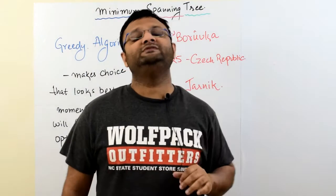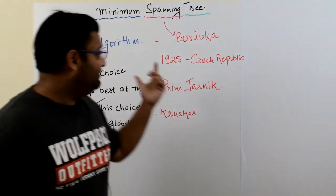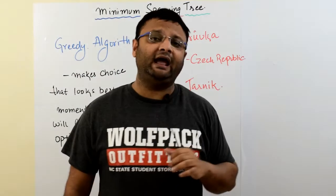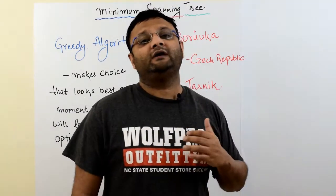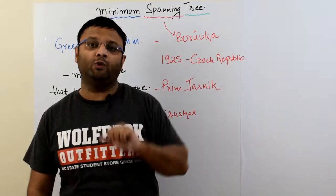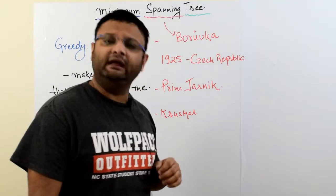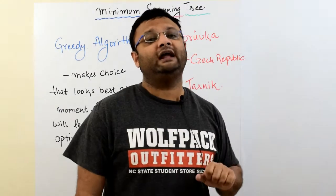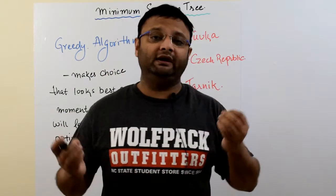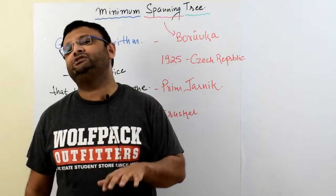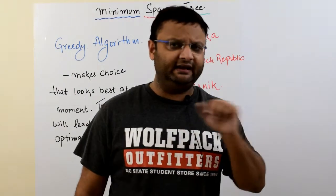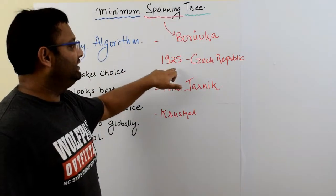Now a brief history — the minimum spanning tree algorithm originated from a problem discussed in episode one. A gentleman named Borůvka, a mathematician, was tasked with efficiently laying electrical wiring between cities in Czech Republic, around World War One. He subsequently published his paper in 1925. The main goal was to optimally connect various towns and villages, which was discussed in detail in episode one.